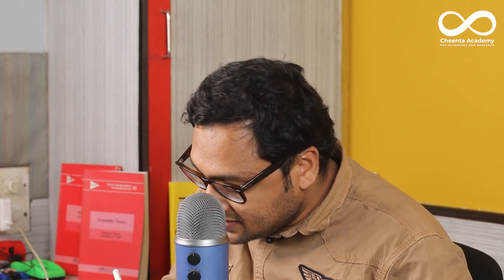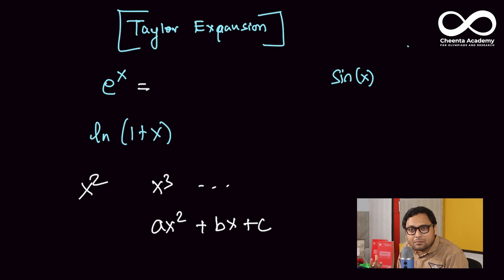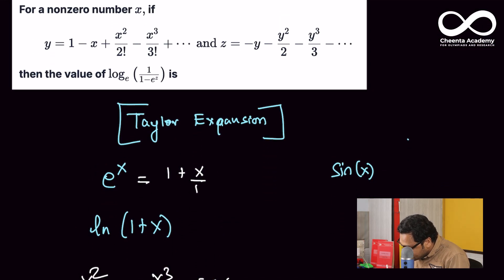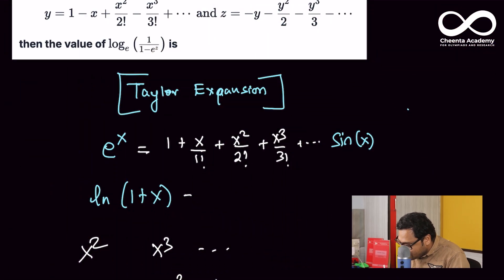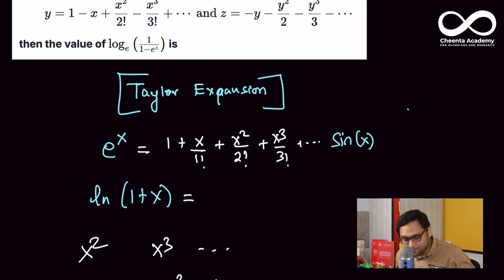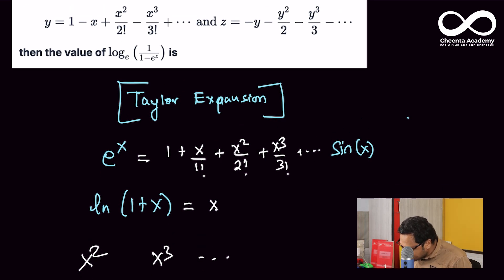What is the Taylor Expansion of e to the power x? The Taylor Expansion of e to the power x, this is something that some people remember. You can also derive it using a little bit of calculus. It is 1 plus x by 1 factorial, plus x squared by 2 factorial, plus x cubed by 3 factorial, and so on. This is the Taylor Series Expansion of e to the power x. What is the Taylor Expansion of ln of 1 plus x? The Taylor Expansion of this is x minus x squared by 2 plus x cubed by 3, and so on. We will be using these two expansions to actually solve this problem.